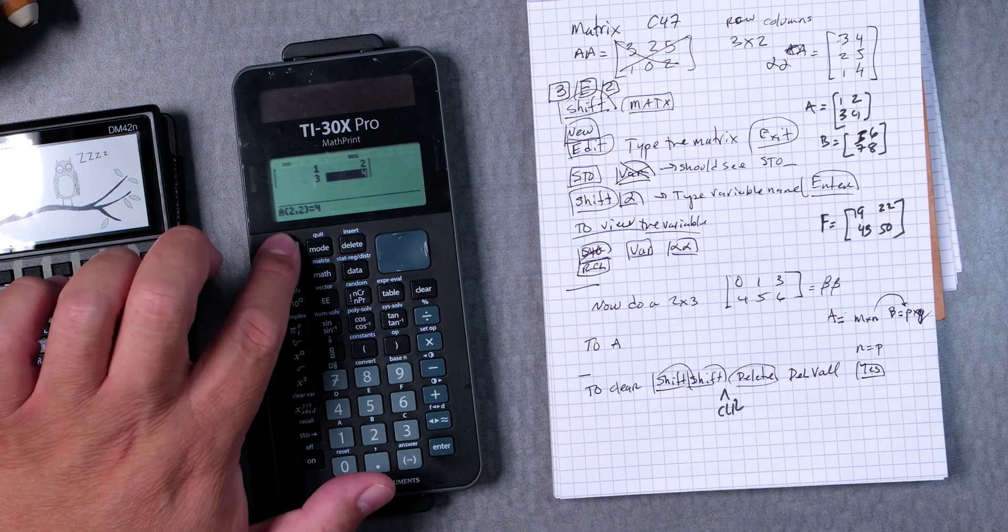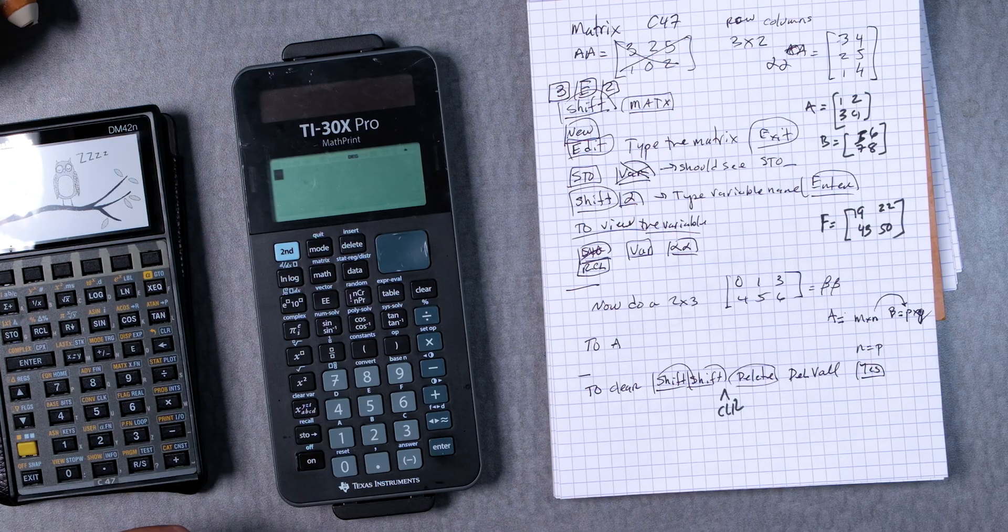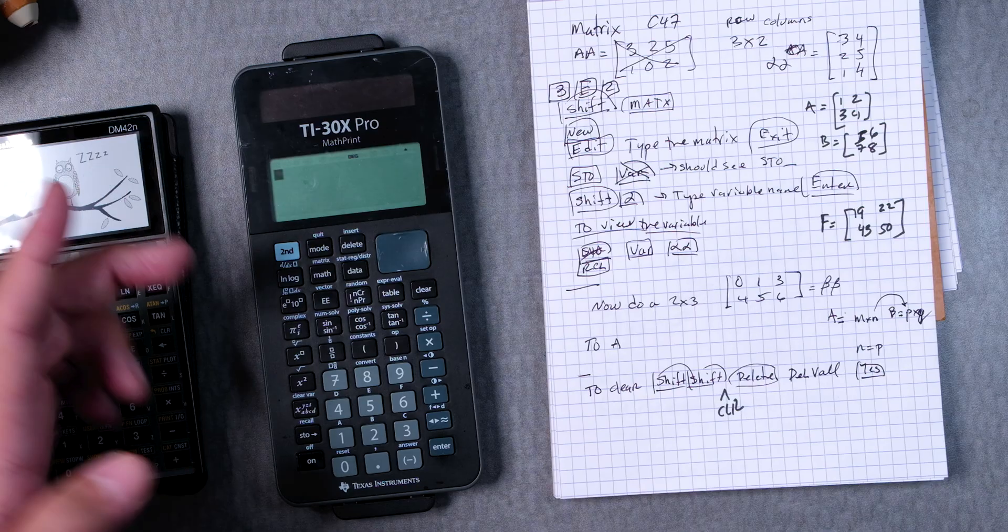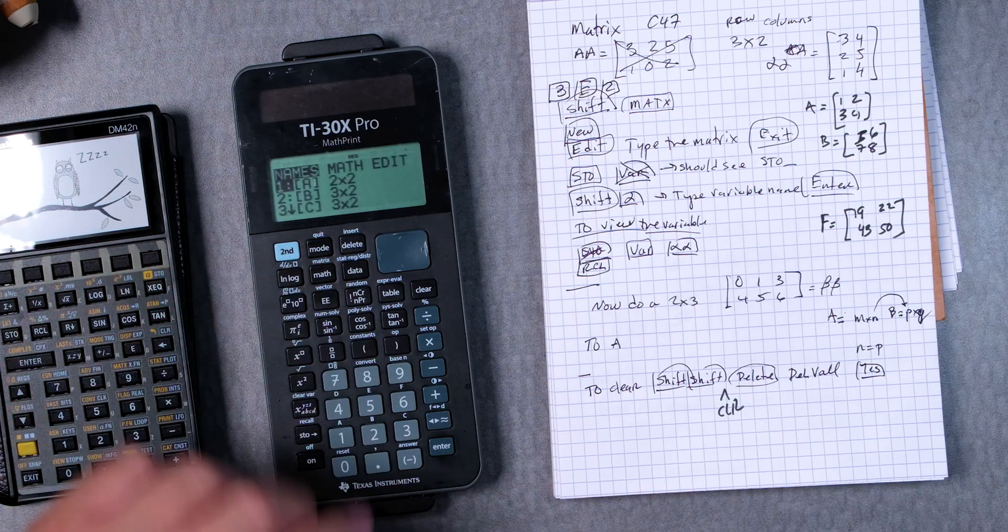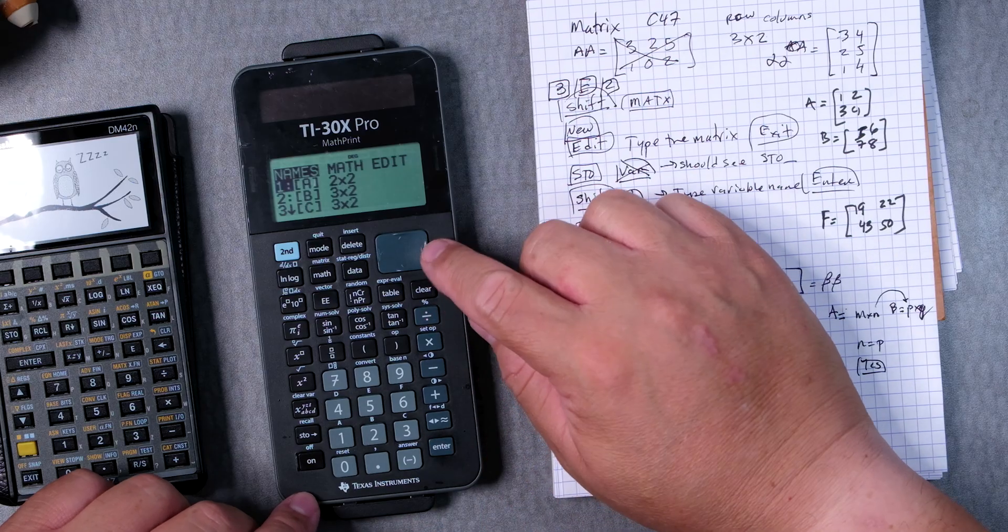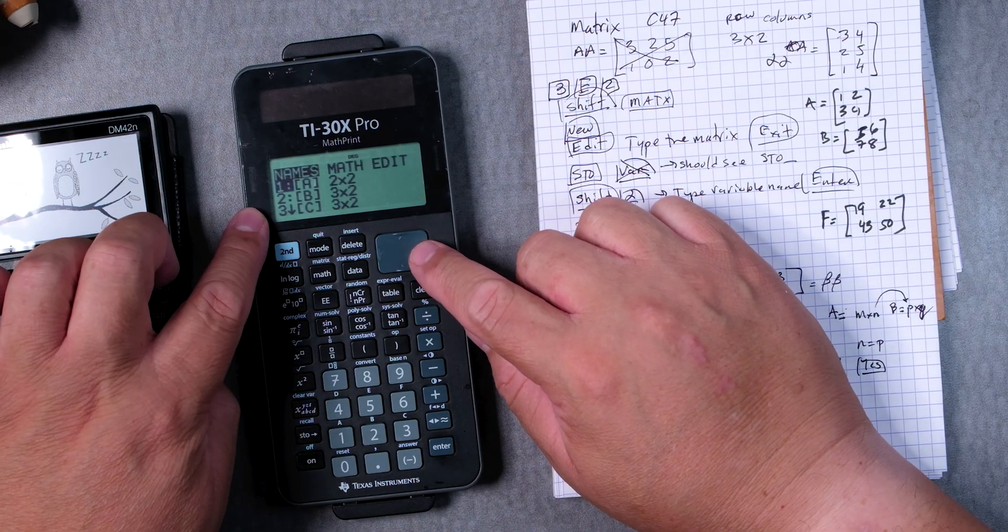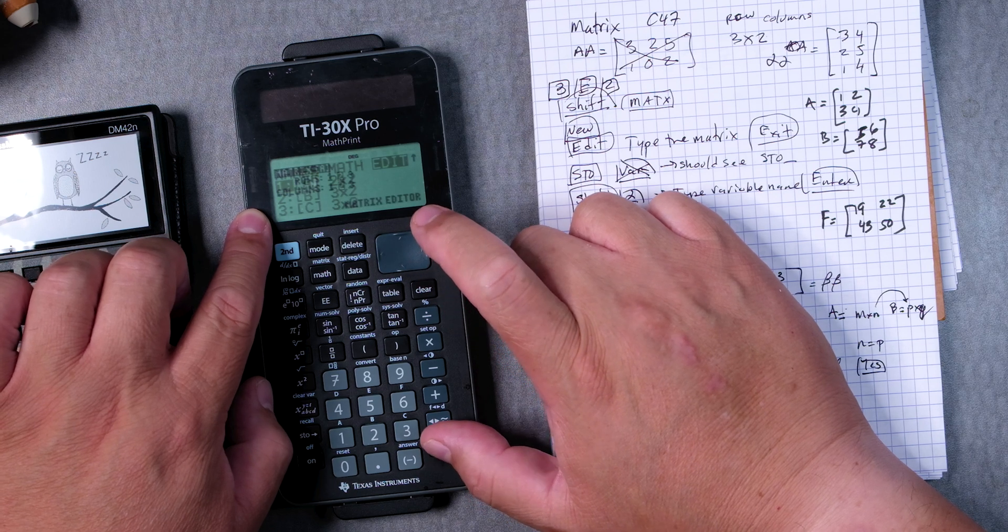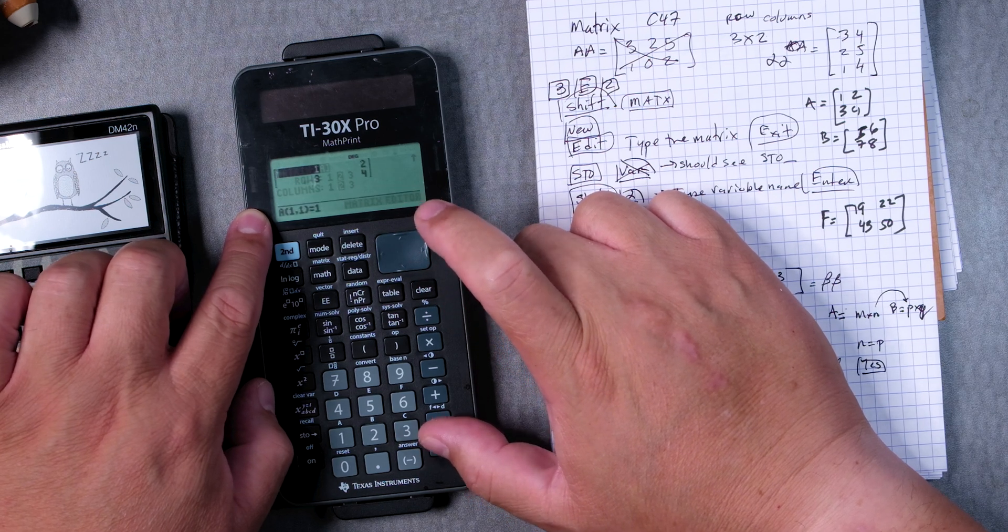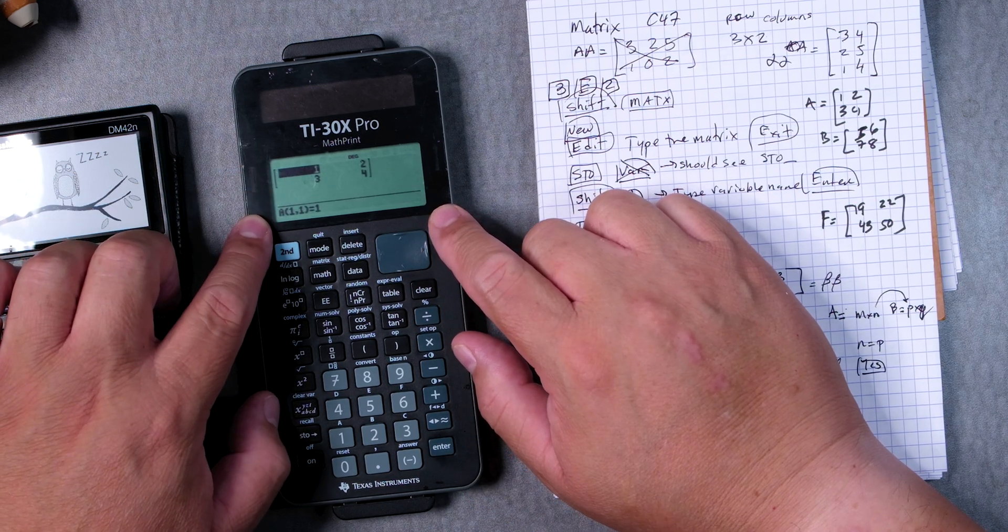We're going to press second quit. There's probably another button you can press but for now, second math, or matrix. And if you go all the way to edit again, this two by two you enter, those numbers are still there.